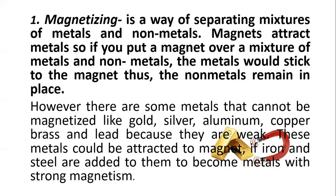However, there are some metals that cannot be magnetized, like gold, silver, aluminum, copper, brass, and lead, because they are weak. These metals could be attracted to magnets if iron and steel are added to them, making them metals with strong magnetism. Last week we discussed the first three ways of separating mixtures, and this week we're going to have three more, starting with magnetizing.